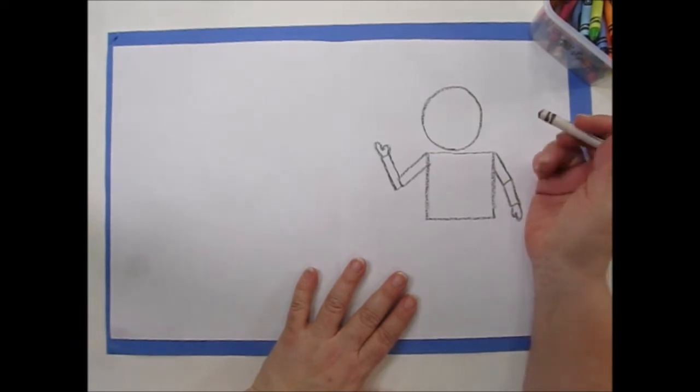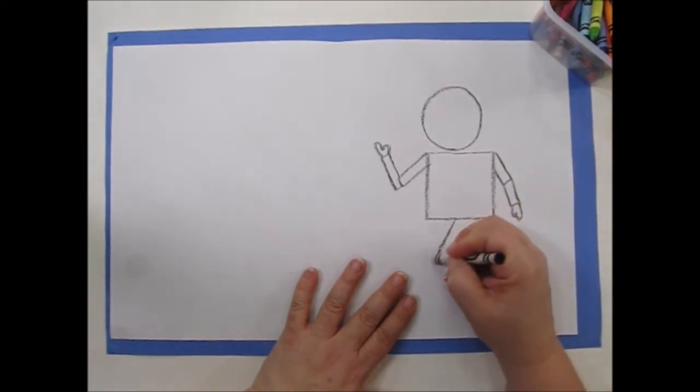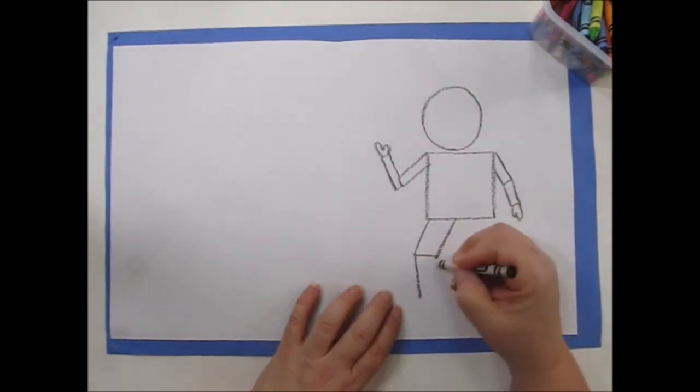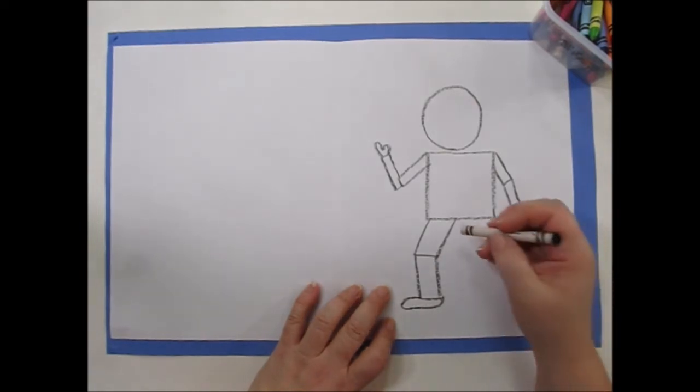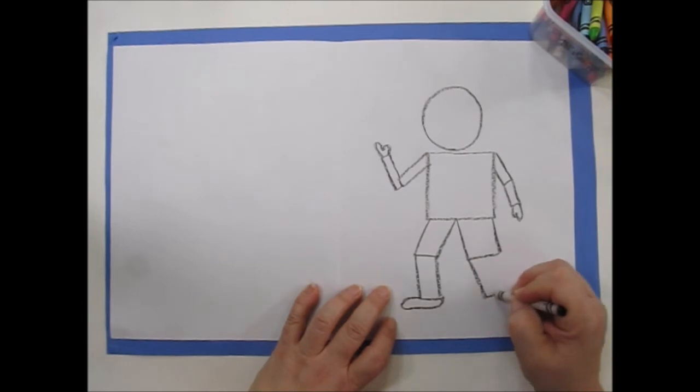Your legs are made of three parts too. That's the first one. This is the knee. This is the shin. And then a foot, kind of like an oval. One. Two. And three.